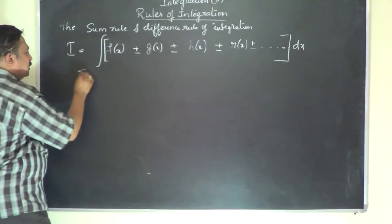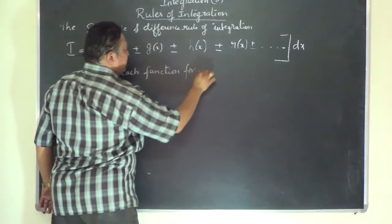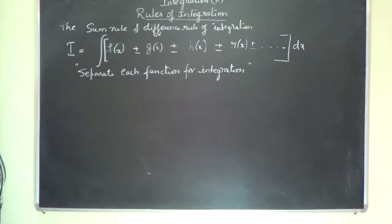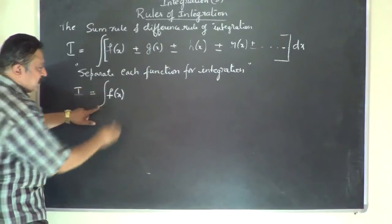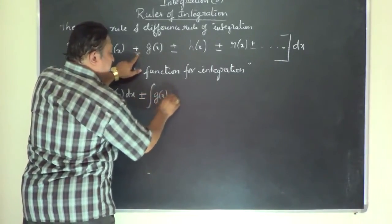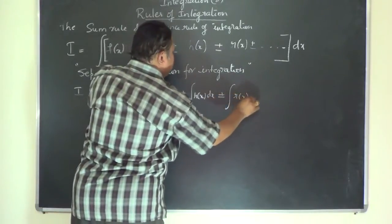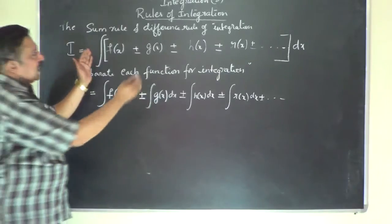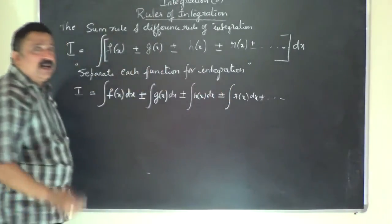The rule says: separate each function for integration. This is the sum rule or difference rule — both rules are the same. If I separate, then I = integral of f(x) dx ± integral of g(x) dx ± integral of h(x) dx ± integral of r(x) dx, and so on. This is called the rule of separation: if you have the sum or difference of many functions under one integral, you can separate each and integrate them individually.